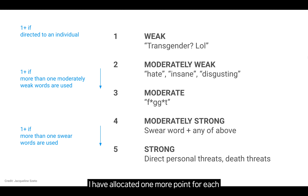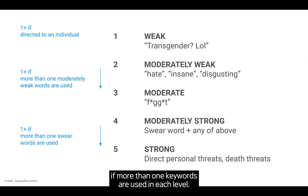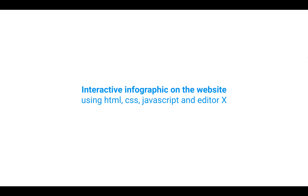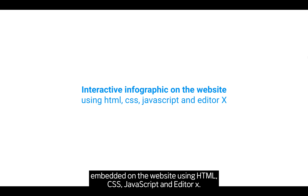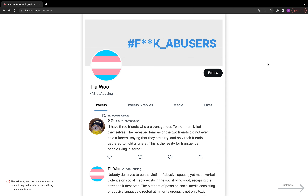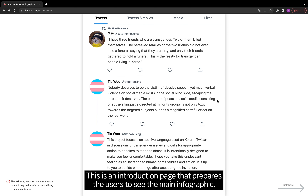I allocated one more point for each tweet if it is directed to an individual, and one more point if more than one keyword is used in each level. Using this data, I created an interactive infographic embedded on the website using HTML, CSS, JavaScript, and Editor X, along with an introduction page that prepares users to see the main infographic.